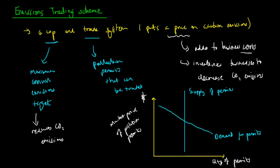However, as we can see, when the demand for permits increases, when people want to emit more, let's say this demand for permits shifts to the right to D2, we can see that the price to purchase these permits actually increases from P1 to P2.